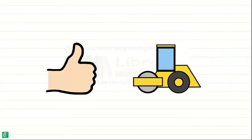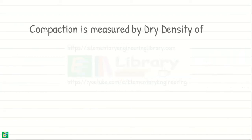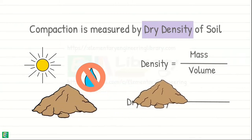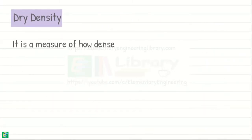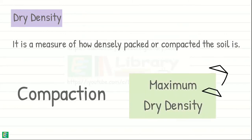Good! We know how to compact a soil, but how do we know how much we have compacted it? The amount of compaction is measured by the dry density of the soil. Dry density is the density of soil when soil is in completely dry state, which means no water is present in its pores. So dry density of soil is mass of soil solids only, divided by its volume. Dry density is a measure of how densely packed or compacted the soil is. The objective of compaction is to achieve maximum possible dry density of compacted soil. Because higher the soil dry density, less amount of voids it will contain and higher will be its strength.